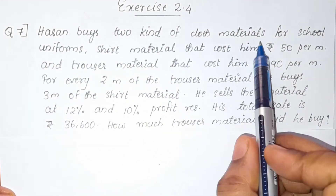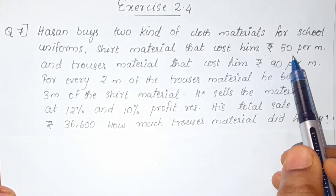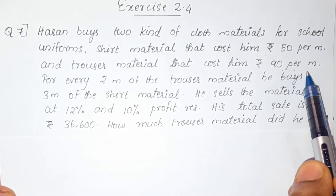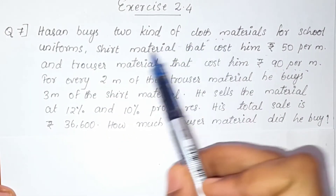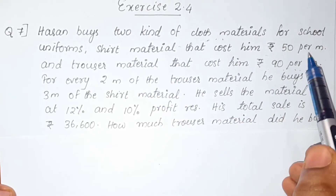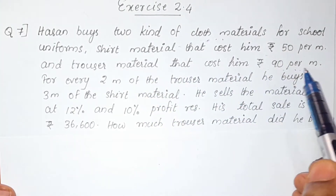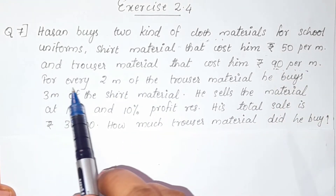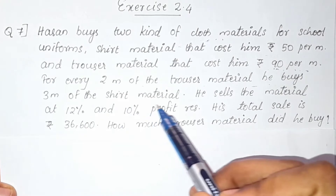A husband buys 2 kinds of cloth materials for school uniform. Shirt material costs him Rs. 50 per meter and trouser material costs him Rs. 90 per meter. For every 2 meters of the trouser material, he buys 3 meters of the shirt material.